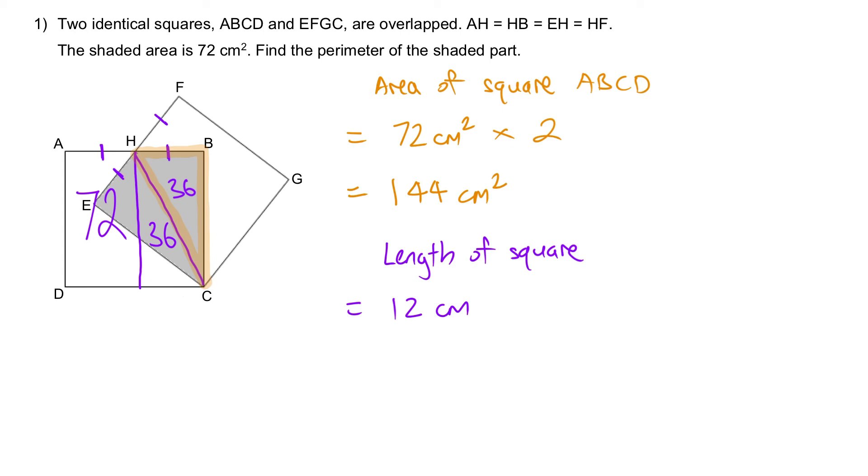Let's adjust the diagram a bit to isolate what we needed to find. Given that right now, we know that the length is 12. Are we able to figure out the perimeter of the shaded part?